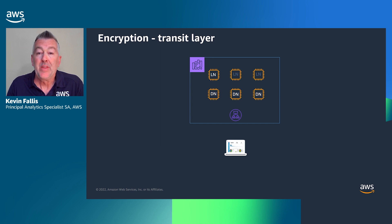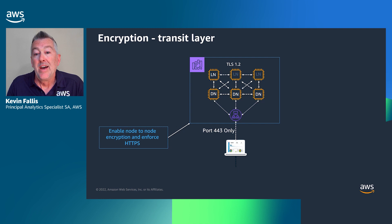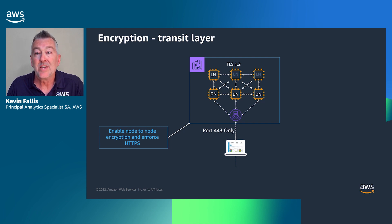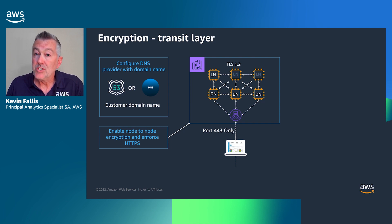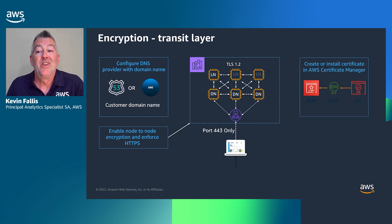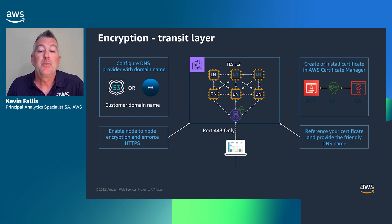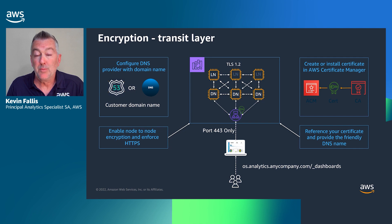Looking at the transit layer for encryption, you have your leader nodes and your data nodes. Between the leader nodes and data nodes, we use TLS 1.2 to secure that data in flight. You'll want to enable node-to-node encryption to enforce HTTPS at the edge for a secure all-around transit layer encryption setup. Additionally, you can configure DNS and bring your own domain name to the Amazon OpenSearch service. You create or install a certificate in AWS Certificate Manager, reference that certificate, and provide the friendly DNS name you want associated with your cluster. Your clients accessing dashboards or programmatically accessing your data will then be able to securely reference that data over the wire using these mechanisms.